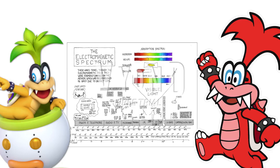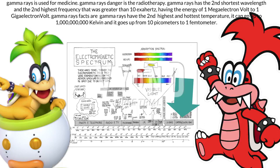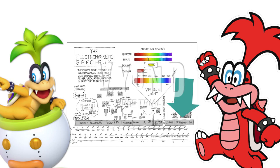Gamma rays are used for medicine. Gamma rays danger is radiotherapy. Gamma rays have the second shortest wavelength and the second highest frequency, greater than 10 exahertz, having the energy of 1 mega electron volt to 1 giga electron volt. Gamma rays have the second highest and hottest temperature, going up to 1 billion Kelvin, and range from 10 picometers to 1 femtometer. It is a penetrating electromagnetic radiation arising from the radioactive decay of atomic nuclei.